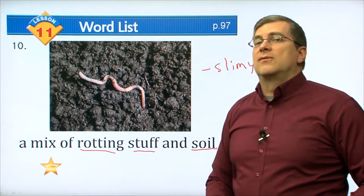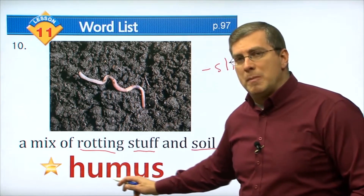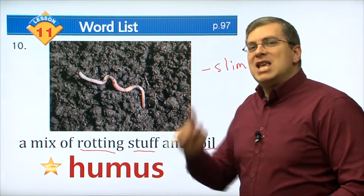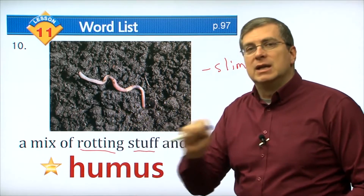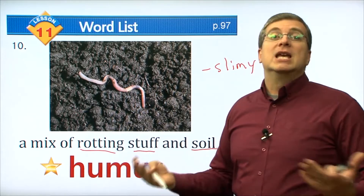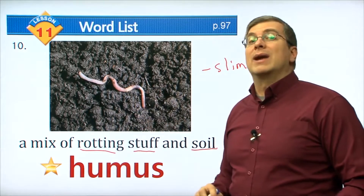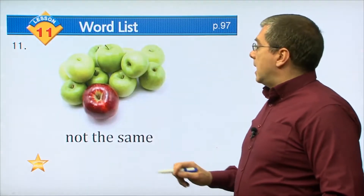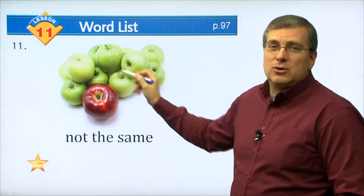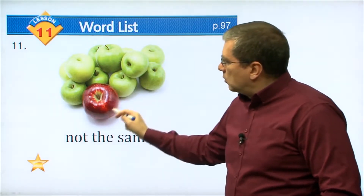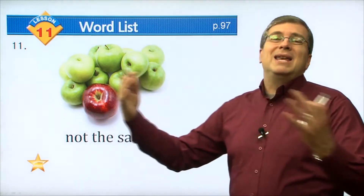Number eight: I talked about this before when I talked about air — air is all around us, in all places. Another word we could use: everywhere. If you look at the sand in the desert, sand is a type of dirt, but things don't grow well in sand. In the desert, sand is everywhere. Right now, air is everywhere — in all places, everywhere around us.